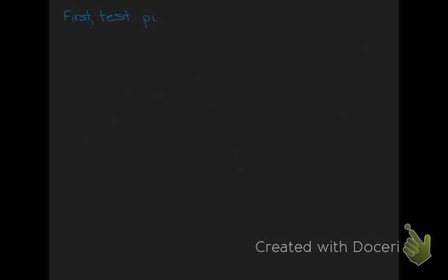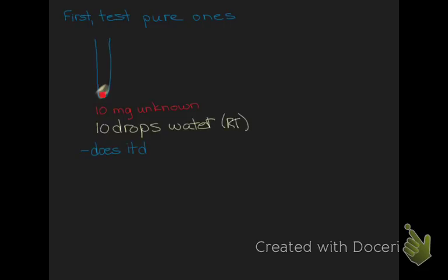To run the solvent tests, first test the pure solvents — pure water and pure ethanol. Put about 10 milligrams of your unknown into a test tube, then add 10 drops of room temperature deionized water and shake it to see if the solid dissolves. If it does dissolve at room temperature, that means water is not a good solvent system, because when you cool it you won't be able to recover the solid — it will stay dissolved.